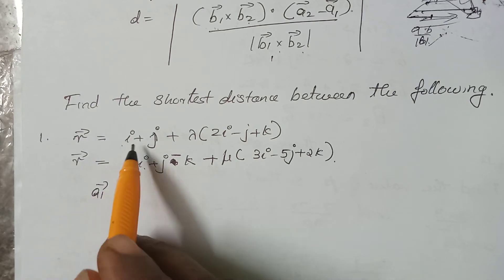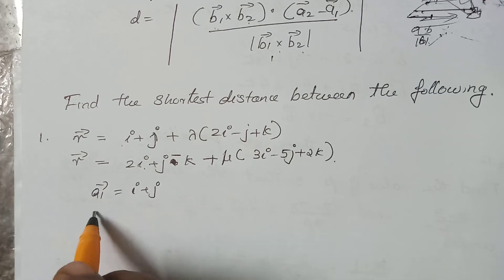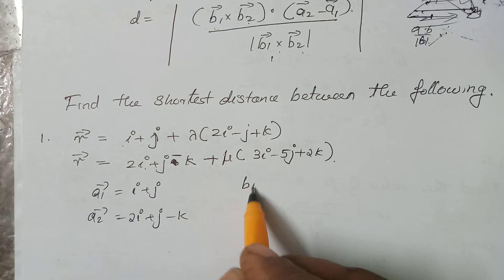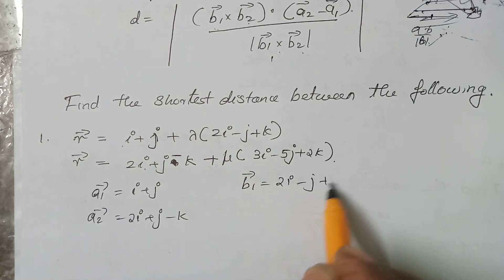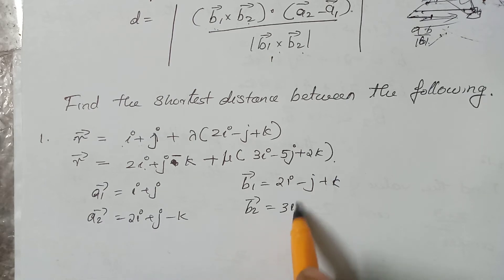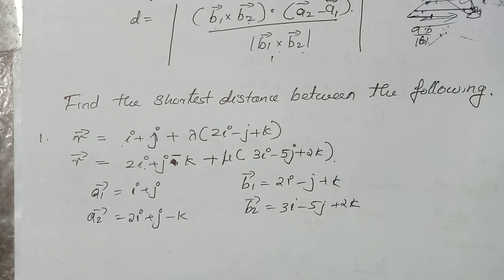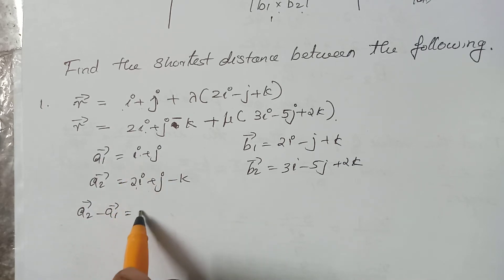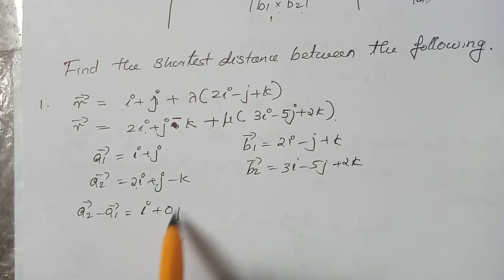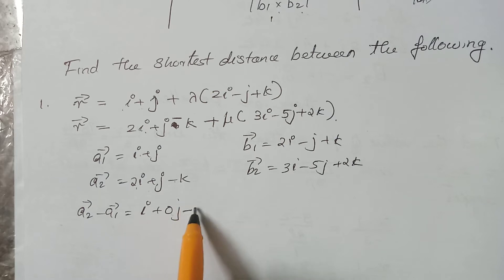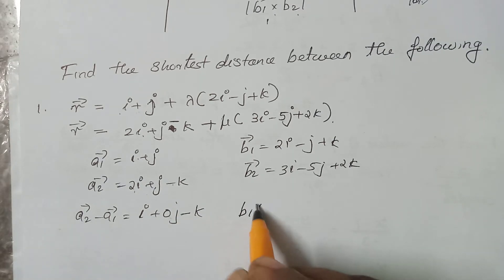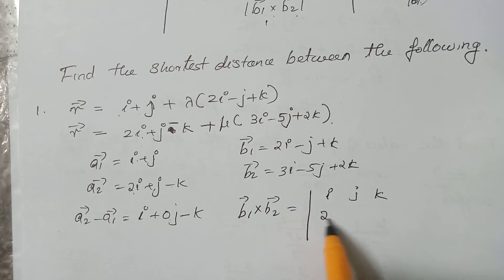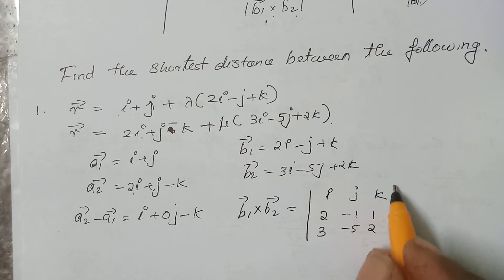In this example, vector a1 is i plus j, vector a2 is 2i plus j minus k, parallel vector b1, parallel vector b2 for the second line is minus 5j plus 2k. We need to find a2 minus a1: that is i, 0j, minus k. We need to find b1 cross b2.